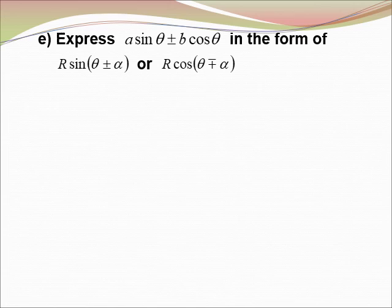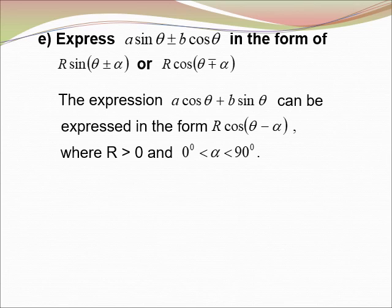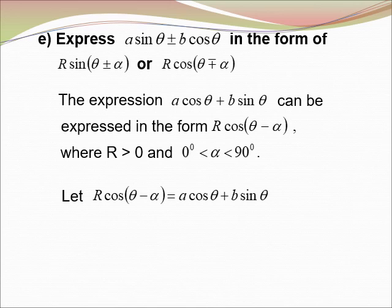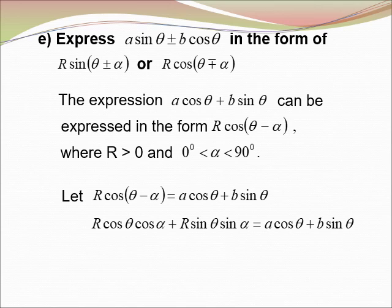Express A sin θ ± B cos θ in the form R sin θ ± α or R cos θ ∓ α. The expression A cos θ + B sin θ can be expressed in the form R cos(θ − α), where R > 0 and α is between 0° and 90°. Let R cos(θ − α) equal A cos θ + B sin θ. Then R cos θ cos α + R sin θ sin α equals A cos θ + B sin θ.